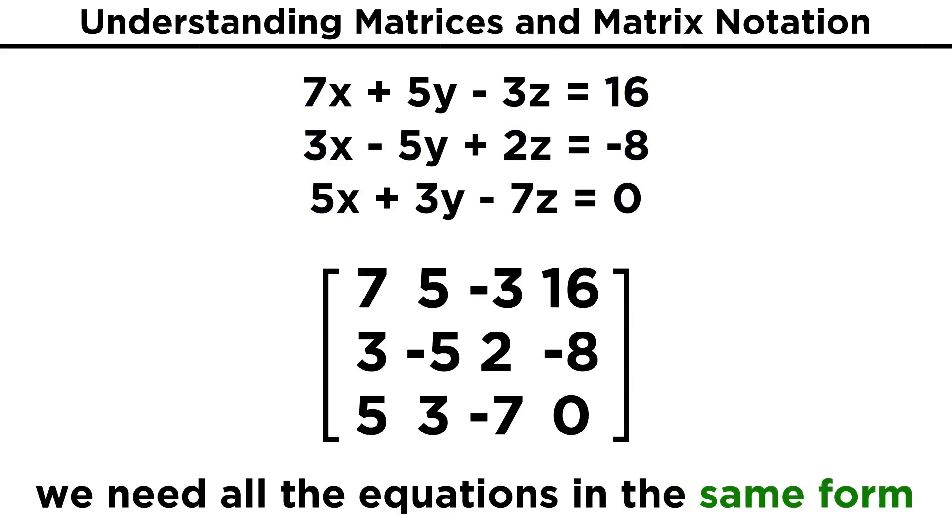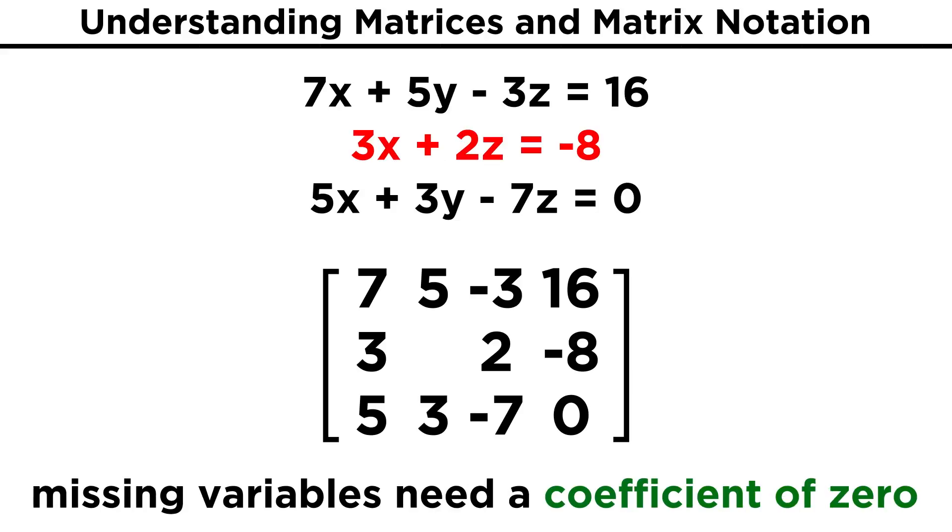We should note something important here. We need all of the equations to be in the same format for this to work. If one of the equations had two variables on the left side and the third variable on the other side, we would have to bring that third variable over with the others by addition or subtraction. Also, if one of the variables is missing from one of the equations, we have to put it back in, but with a coefficient of zero. This will not change the equation, but it gives us a coefficient of zero to plug into our matrix.